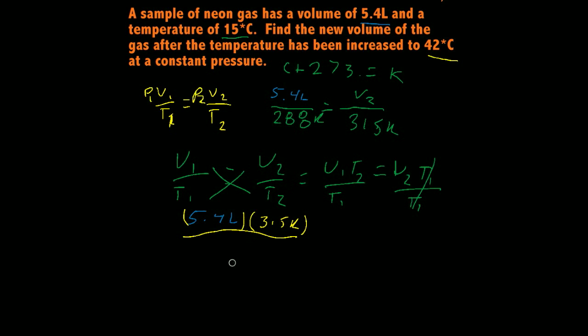315 degrees Kelvin, divided by our first temperature, which is 15 degrees Celsius, which turned into 288 degrees Kelvin, and now that's going to equal our V2.